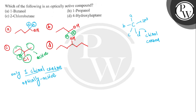In option D, the carbon has two identical propyl radicals present, so this compound is again optically inactive. Therefore, only option C is the correct answer — 2-chlorobutane is the optically active compound. Option C is the correct answer. Thank you.